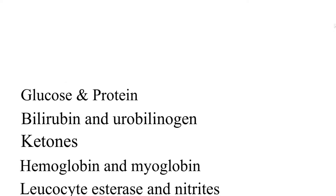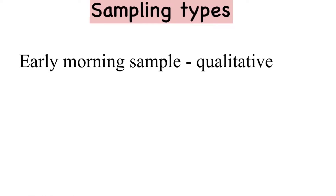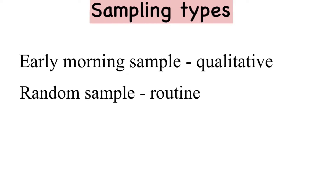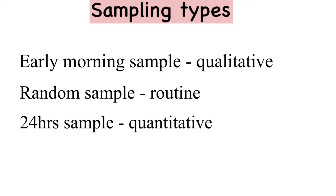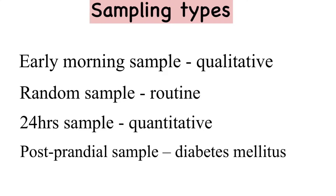What are the predominant types of sampling? It comprises of early morning sample, which is usually taken for qualitative analysis, random sample for routine analysis, 24 hour sample for quantitative analysis, and postprandial sample in patients with diabetes mellitus.